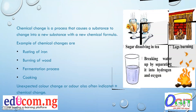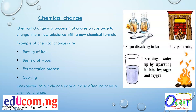A chemical change is a process that causes a substance to change into a new substance with a new chemical formula. For example, rusting of iron — it becomes oxygenated and turns brown, changing its chemical composition. Burning of wood changes it to ash. Fermentation and cooking also change the chemical components of substances.